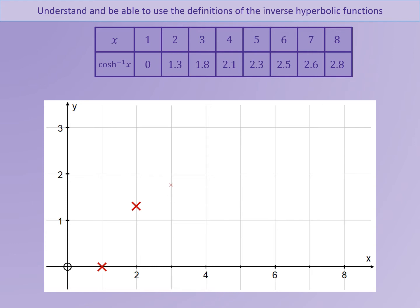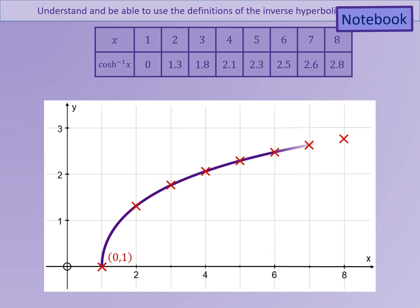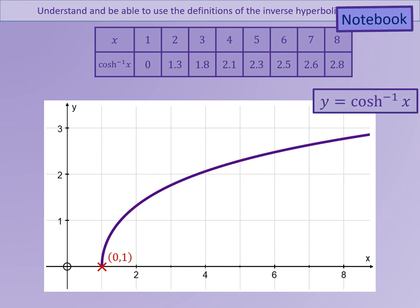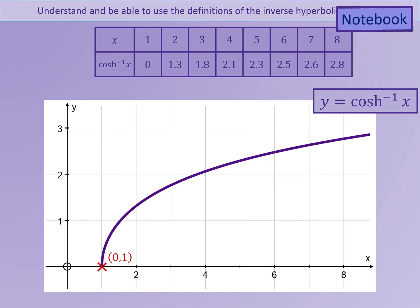So we're going to plot these points here. You'll notice again that this is a reflection in the line y equals x of the graph y equals cosh x. However, we are only taking the top part of this graph, not the bottom part. Even though reflecting the original catenary curve would also give negative y values, this is because a function cannot have more than one output for every input. This would be known as a one-to-many function, which is not allowed in the definition of functions. So we're only going to consider positive y values here for the inverse cosh graph.